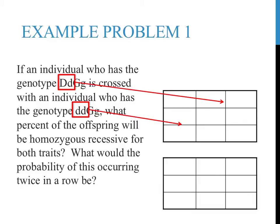For this problem, I will start by dealing with all the information that has to do with the D trait. I went through this problem and boxed any information that I thought was relevant regarding this trait. Boxing, highlighting, or underlining this information can help you sort through the tremendous amount of information in these product rule problems. Next, the parental information regarding the D trait needs to be put on the outside of one of the Punnett squares, as shown here. The next step is to fill out the D Punnett square, as shown on this slide.